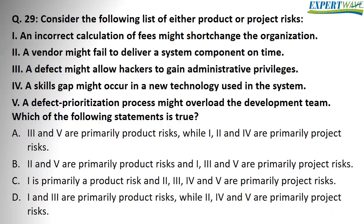Let's now look at the options. Option 1: an incorrect calculation of fees might short-change the organization. It seems they mean the customer site, but let's assume you are not sure about that, so let's move on to pick an option we are 100% sure about. Option 2: a vendor might fail to deliver a system component on time. This could happen while we are building the software, so this is a project risk. Looking at the answers, we now narrow down to either A, C, or D.